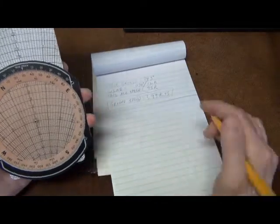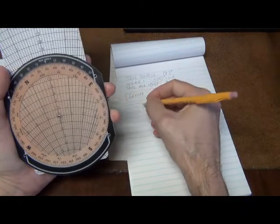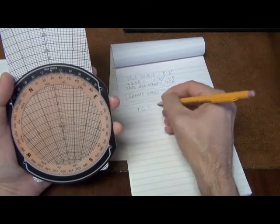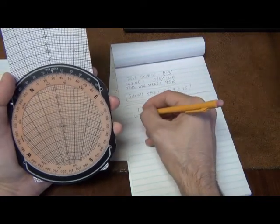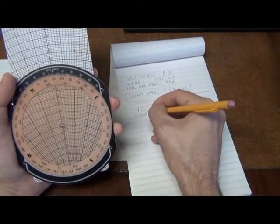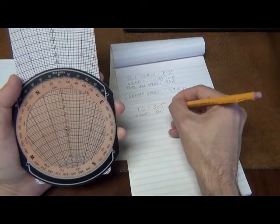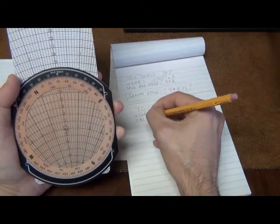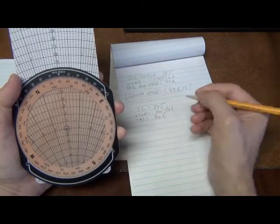Now let's do another one. Let's assume one of the questions that we are practicing with, or one of the questions from the test, gives you a true course of 345 degrees. They give you wind information of 300 degrees at 14 knots. And the true airspeed they give us is 90 knots.